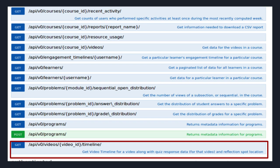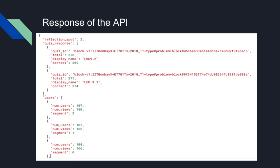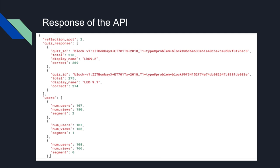The URL highlighted in red was created by us. The API response shows the reflection spot segment — the whole video is cut into five-second segments, showing how many viewers were present in each segment. The segment number next to the reflection spot indicates it occurred between 5 and 10 seconds. Additionally, two quizzes below the video have their responses recorded, with total answers and total correct answers provided by the API. The third part the API provides is the number of users and views per segment.